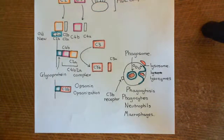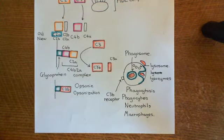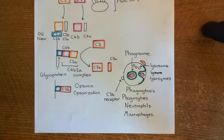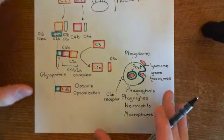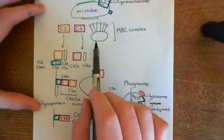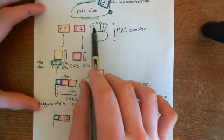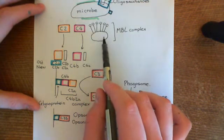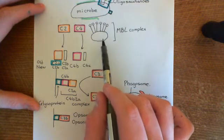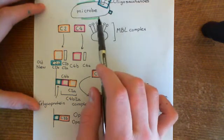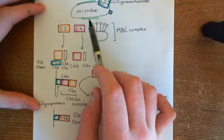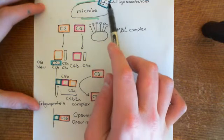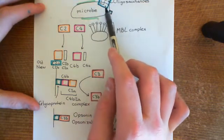Welcome back to this next video in which we are discussing the lectin complement pathway. So far what we've seen is that when an inflammatory exudate is formed, it will bring in mannose binding lectin complexes and complement proteins to the interstitial fluid where the microbes are invading. The mannose binding lectin complexes will bind to the terminal mannose and glucose monosaccharides on the ends of polysaccharides and on oligosaccharides within glycoproteins on the surface of the microbe.